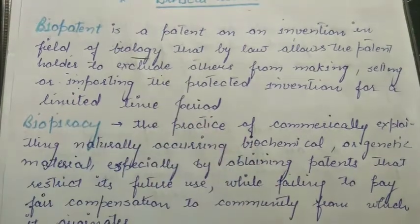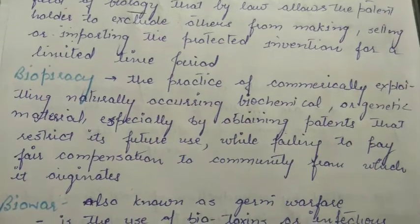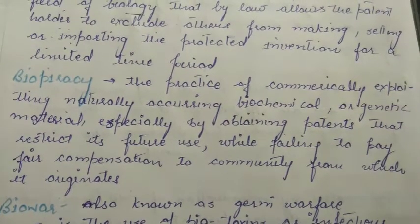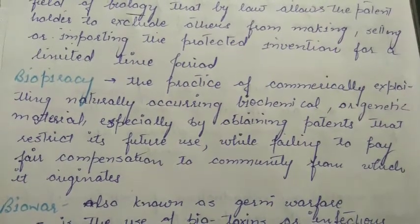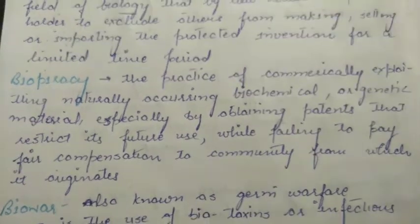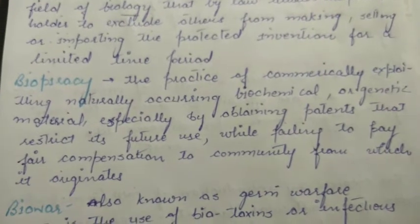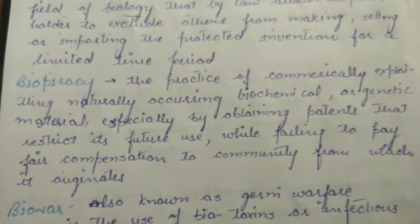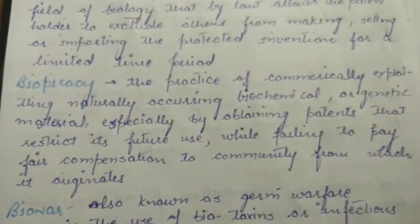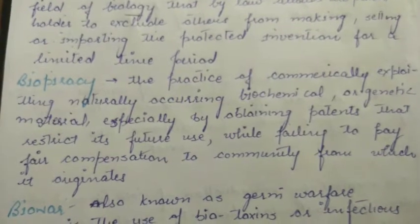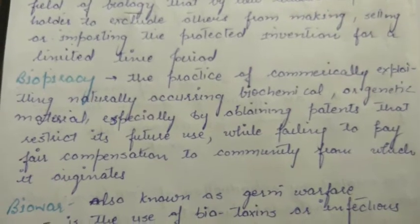The next term is biopiracy. Biopiracy is the practice where people take naturally occurring biochemicals and organic materials, obtain patents for them, and restrict their use. In short, it involves taking something from a natural source and obtaining a patent for it through some modification. For example, certain plants used in Indian traditional medicine have been subject to biopiracy.